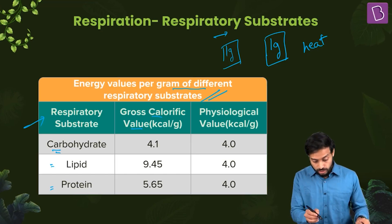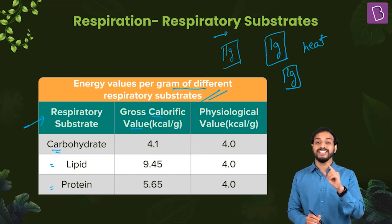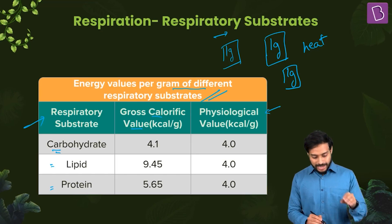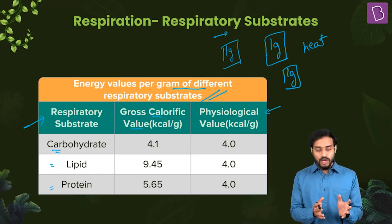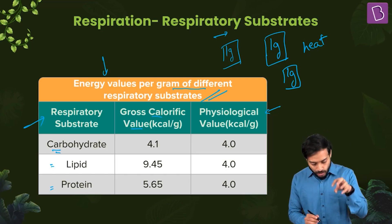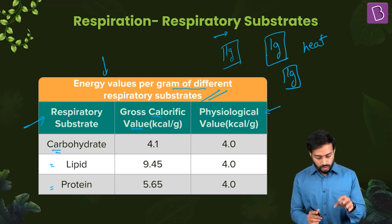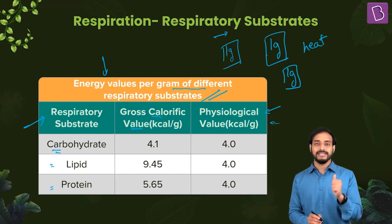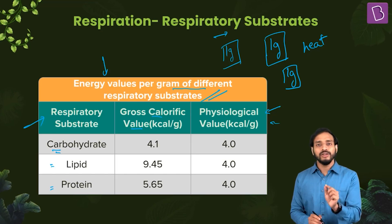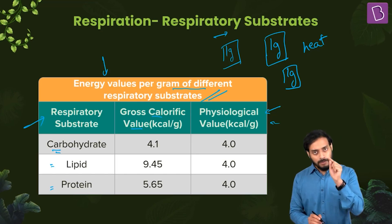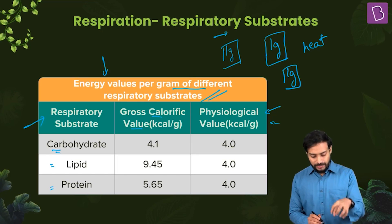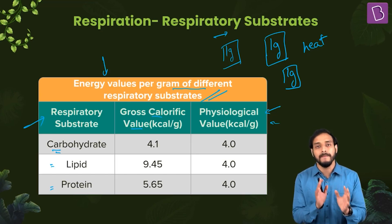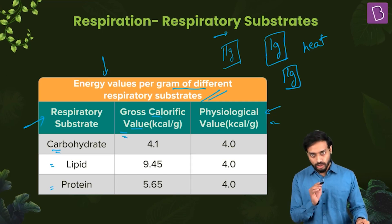The gross calorific value is the energy produced when one gram of a respiratory substrate is oxidized in a bomb calorimeter. The actual amount of energy released by oxidation of one gram of a respiratory substrate in the body is known as the physiological value. So the gross calorific value is measured in the bomb calorimeter, while the physiological value is the actual energy released in the body.